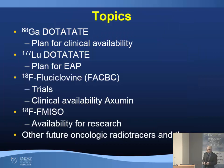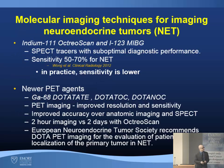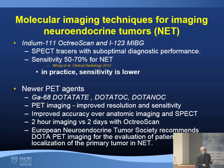These are the topics I'm going to be discussing. First, we'll talk about gallium-68 dotatate and the plan for clinical availability at Emory. Currently there are many molecular imaging techniques for imaging neuroendocrine tumors, but they're very much from the past. The first is indium-111 octreoscan and also I-123 MIBG. These examine different aspects of the neuroendocrine metabolome.